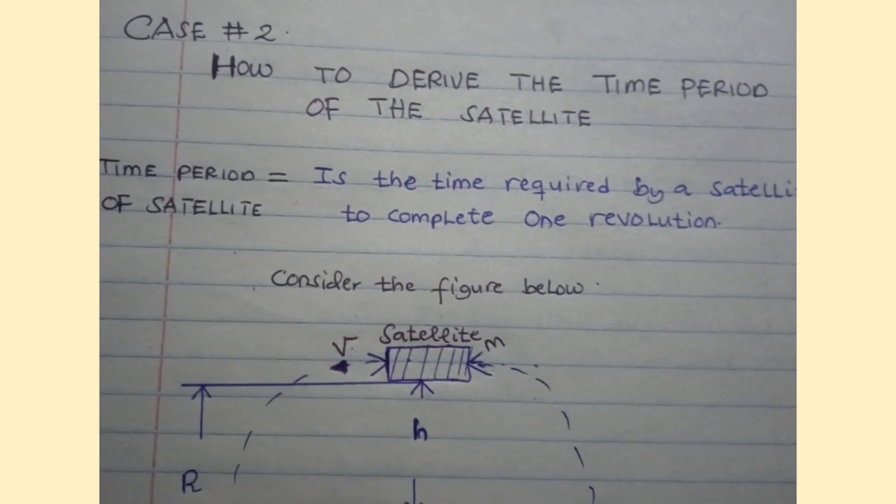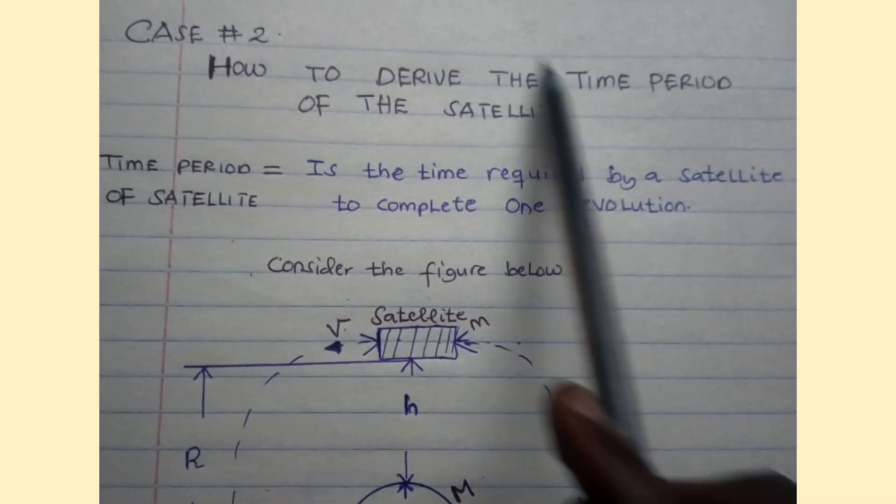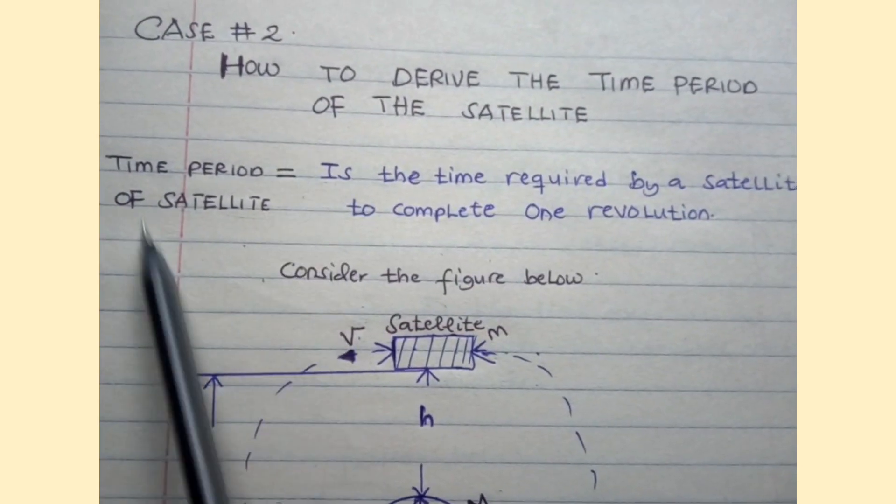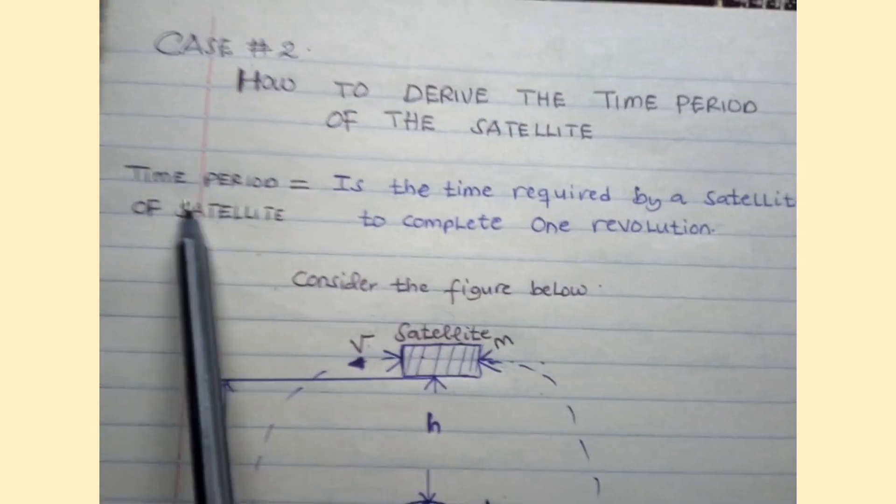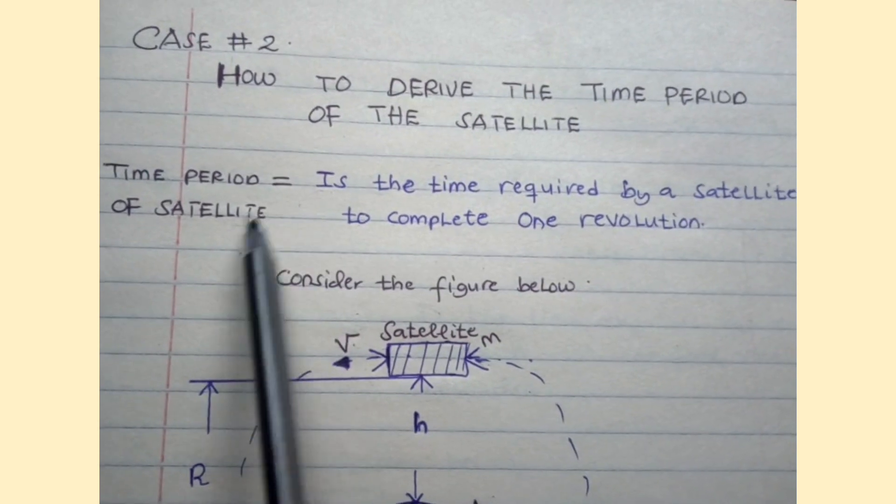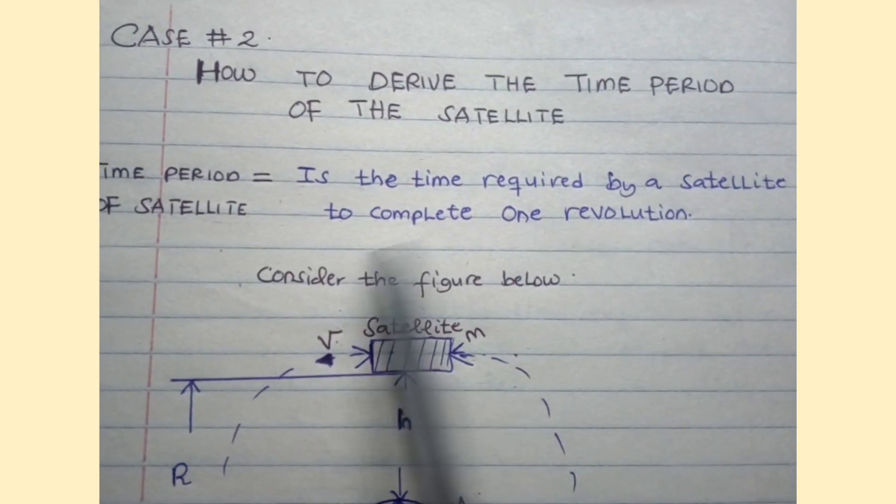Before derivation, let's define what the time period of the satellite means. The time period of the satellite is the time required by a satellite to complete one revolution.